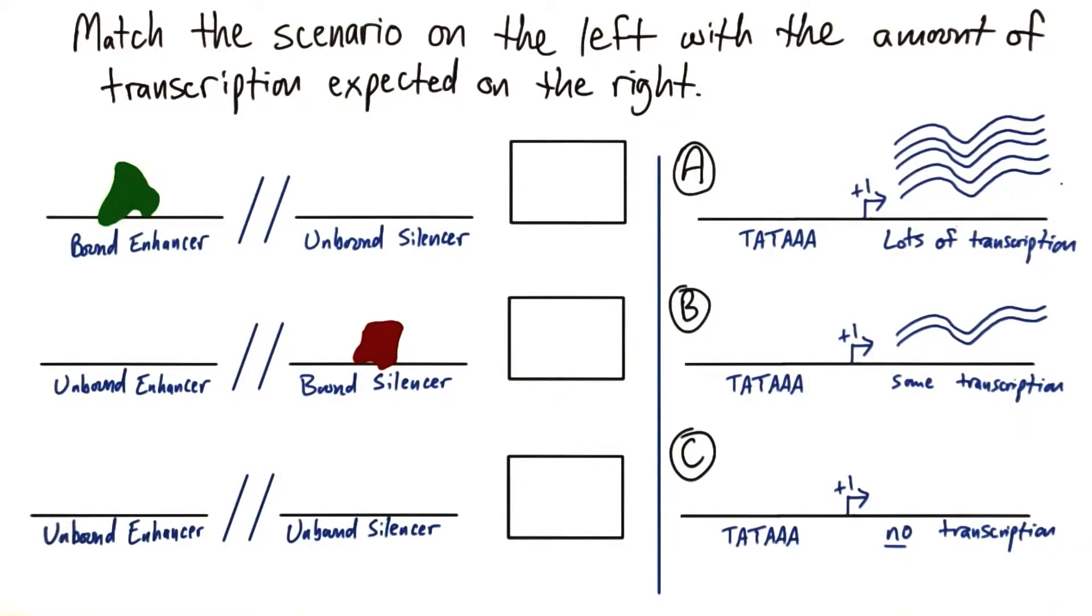I know we just learned a lot of new terminology, but hopefully you're able to breeze right through this one. Now we have three scenarios: a lot of transcription, a medium amount of transcription, and no transcription.